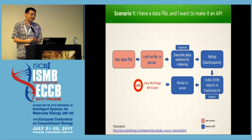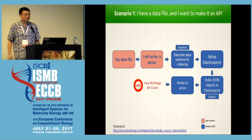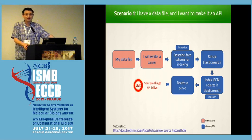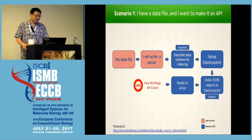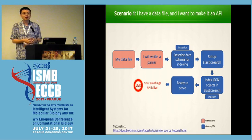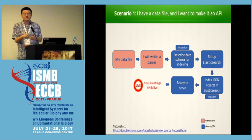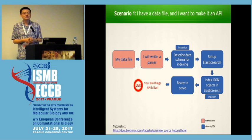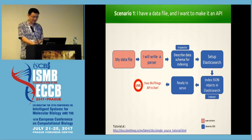Here I want to focus on two simple scenarios where you can benefit from the BioThings SDK. The first one is: you have a data file and you want to make it an API so other people can use it or you can use it in your own applications. You start with your data file, write a parser to convert it to JSON format however you like to structure your JSON object. Then the BioThings SDK takes your parser and uses a tool called the inspector to describe your data object and produce a data schema for you. That helps with indexing — we use Elasticsearch for the index — and after that you're pretty much ready to serve the API.